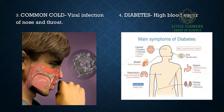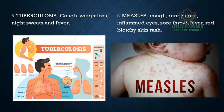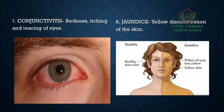Number four is diabetes — it is a metabolic disease that causes high blood sugar. Number five is tuberculosis; its symptoms include cough, weight loss, night sweats, and fever. Number six is measles; the symptoms of measles are cough, runny nose, inflamed eyes, and a red blotchy skin rash.